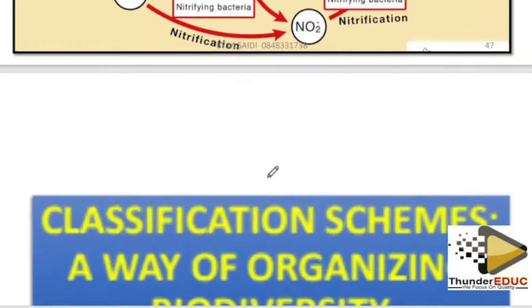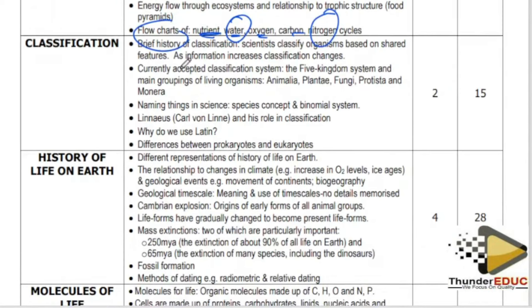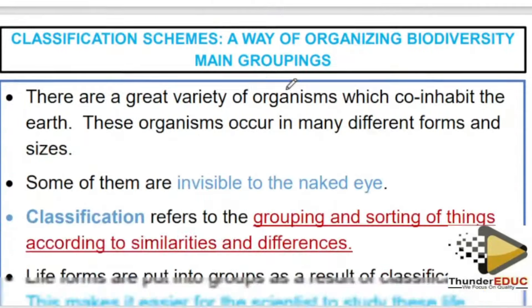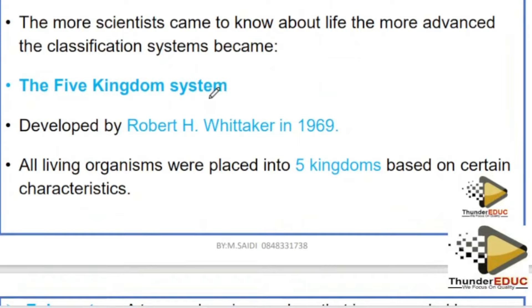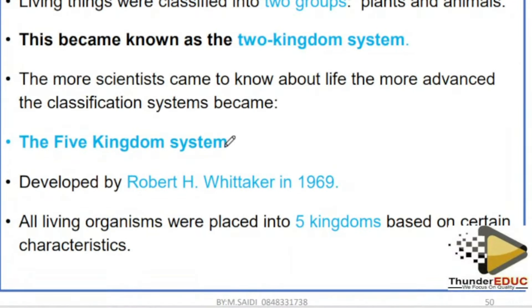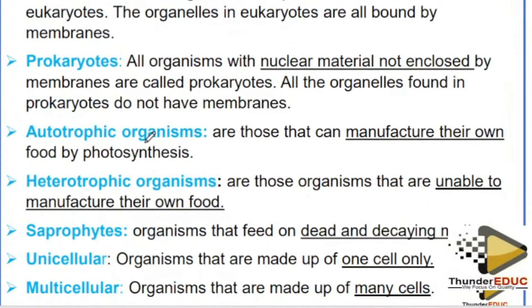The next topic is classification. You have to know why scientists use scientific names — to prevent confusion. Know the five kingdom system and the different ways of classifying organisms. We like the five kingdom system. We also bring up eukaryotes and prokaryotes: 'pro' means before, 'eu' means true nucleus, meaning eukaryotes have a true nucleus bounded by a membrane.